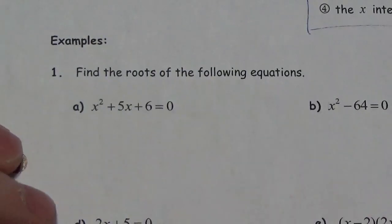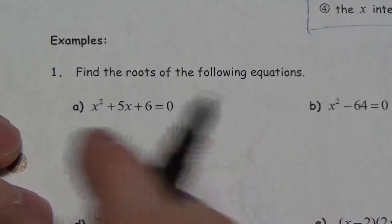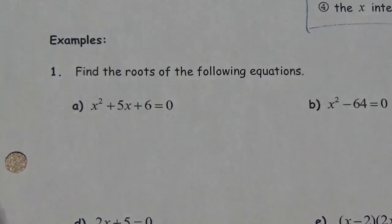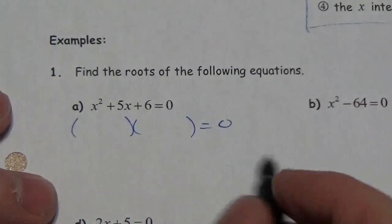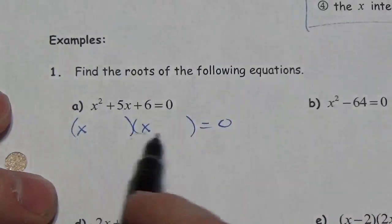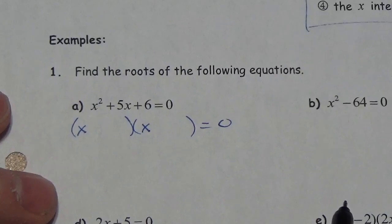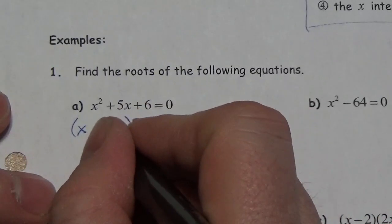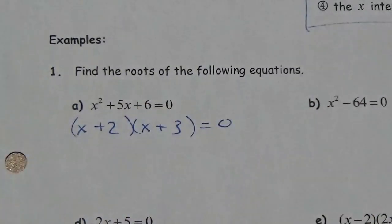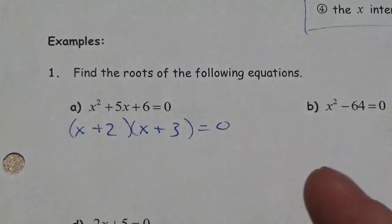We're going to find the roots of the following equations. Starting with x² + 5x + 6 = 0. I'm going to try to do this by factoring. This is a trinomial so I'm hoping to break it out to two binomials where the leading term in both is x, because x times x equals x². I'm looking for two numbers whose product is 6 and whose sum is 5 — that's 2 and 3.